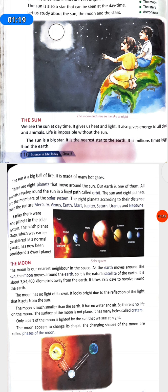The sun is a big ball of fire. It is made of many hot gases. There are eight planets that move around the sun. Our earth is one of them. All planets revolve around the sun in a fixed path called orbit. The sun and eight planets are the members of the solar system.